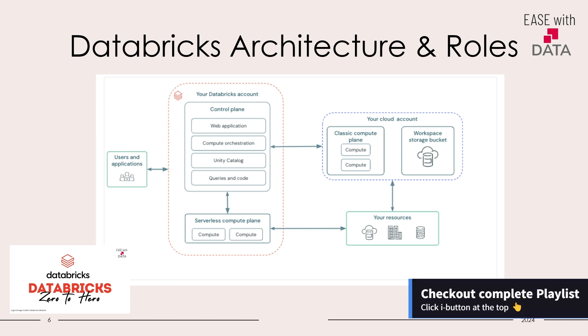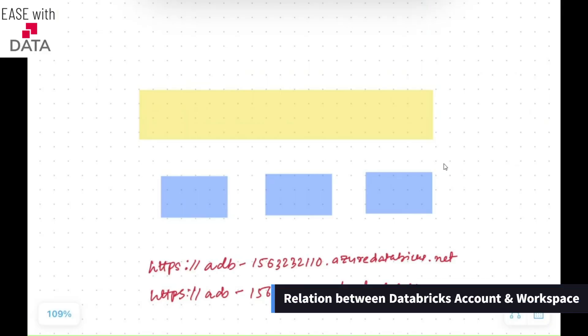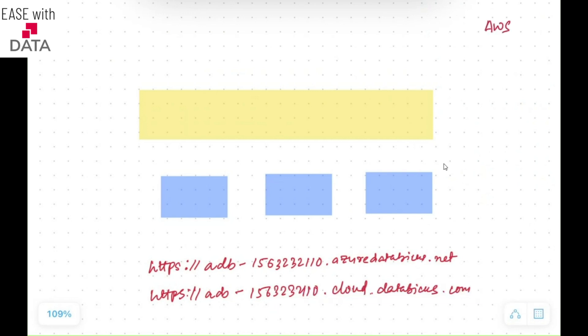If you have not seen our previous videos, just go ahead and check them out. Hit the i button at the top. Now, in order to work with Databricks, you can use any of the three cloud providers — either AWS, Azure, or GCP. Out of these three, you can select any one of them. If you already have a cloud partner, you can just go ahead and have Databricks for the same cloud partner enabled.